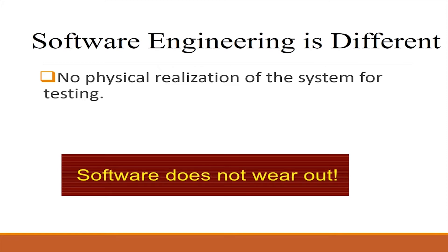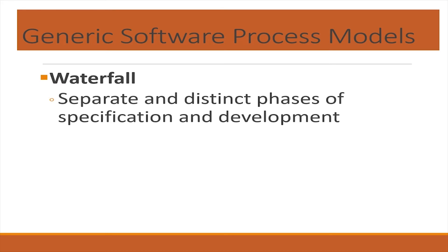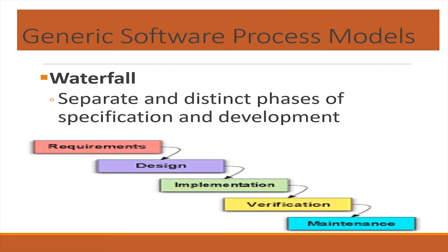Let's look at some examples of generic software engineering process models. The waterfall model has separate and distinct phases of requirement specifications and development. These phases are iterative — one phase is carried out repetitively until it's free of errors, then a second phase is started.